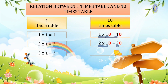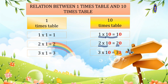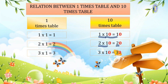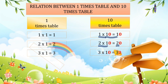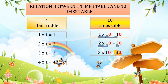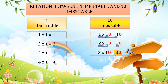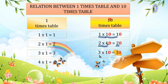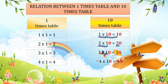Continuing: three times one equals three, so three times ten equals thirty. Four times one equals four, so the relation gives us four times ten equals forty.